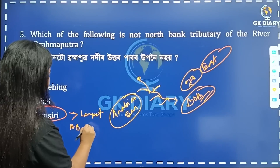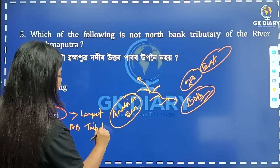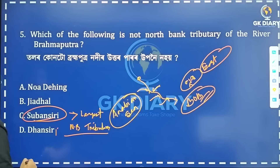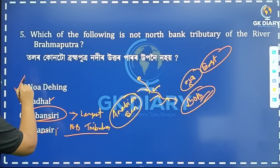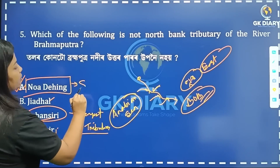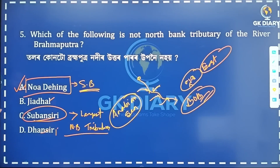North bank tributary of Brahmaputra — the correct option for which is not a north bank tributary. What is the correct answer for this question?